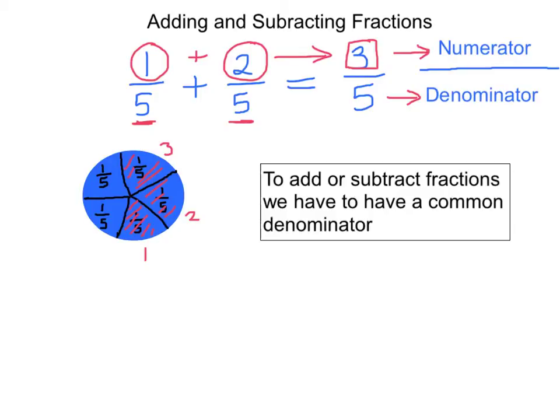So to recap on what we have done, to add or subtract fractions, we have to have a common denominator, which in the example above was the number 5. 5 was the common denominator between these two fractions.